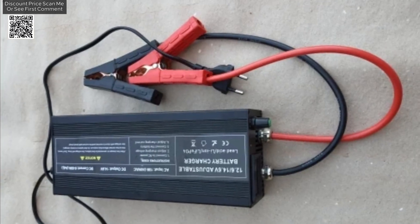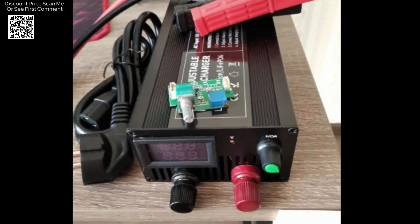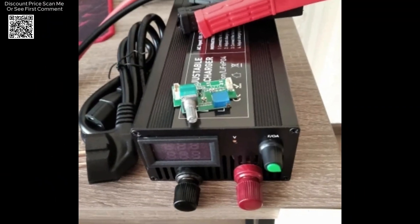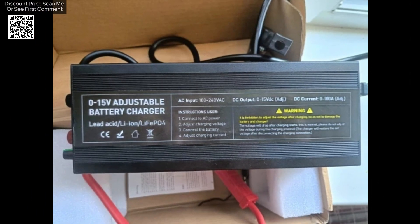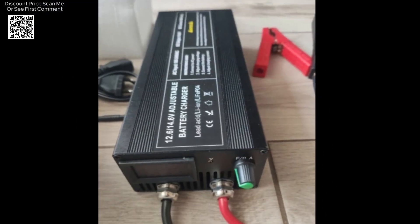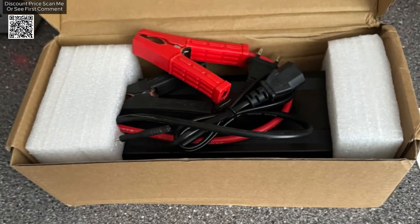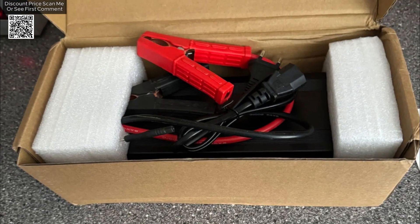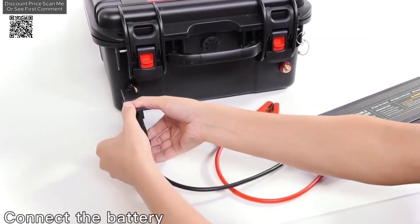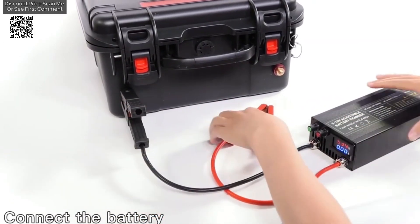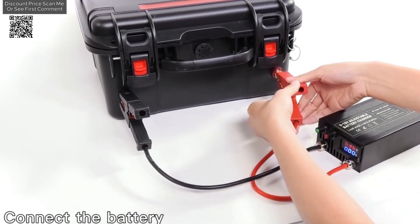For users looking for a more straightforward charging experience, the 50A and 80A versions of the charger feature a fixed voltage of 14.6 volts with adjustable current settings. These models allow users to set the current between 0 to 50A or 0 to 80A depending on the version. This configuration simplifies the charging process while still offering high performance, making it an ideal choice for those who want a reliable and fast charger without extensive adjustments.